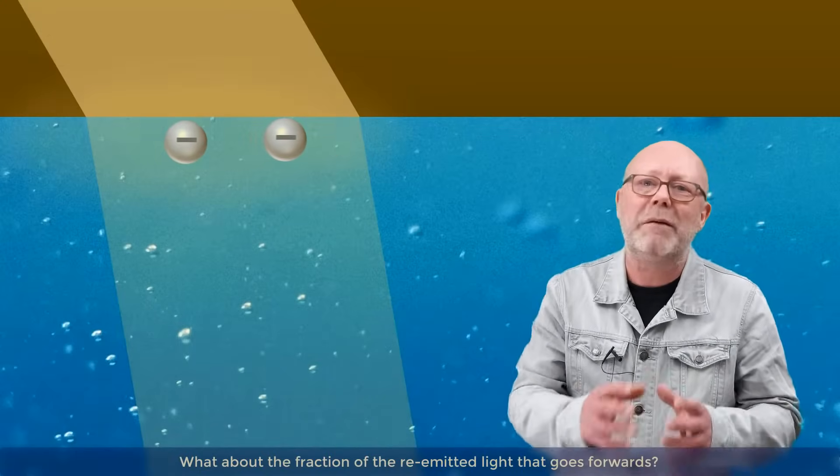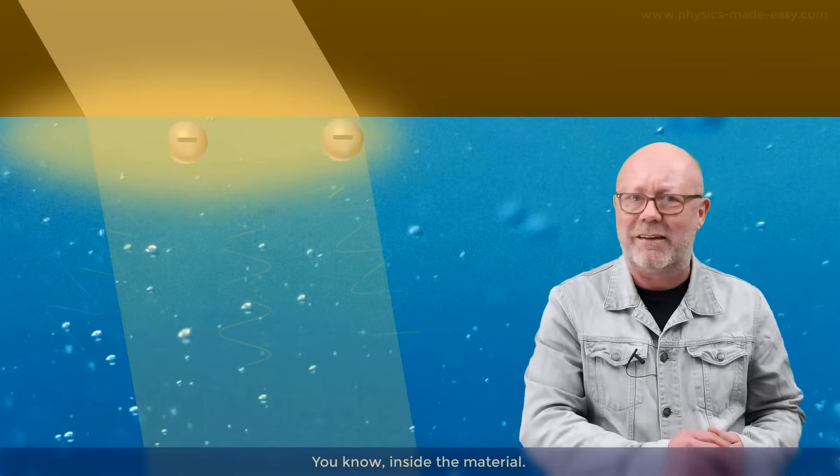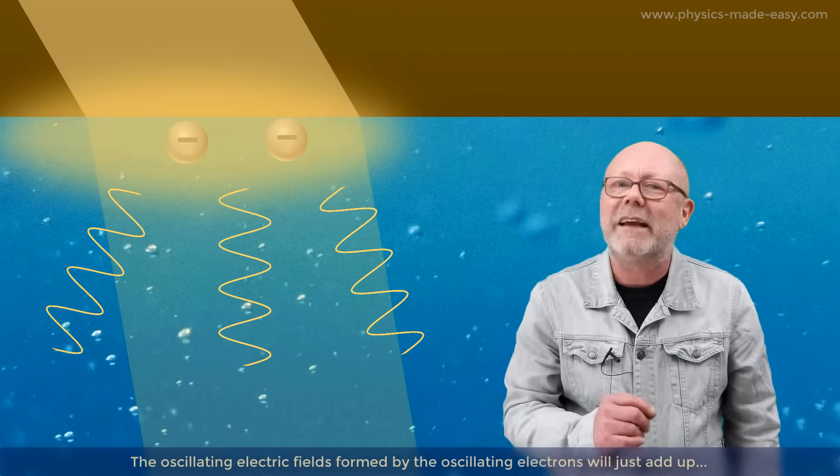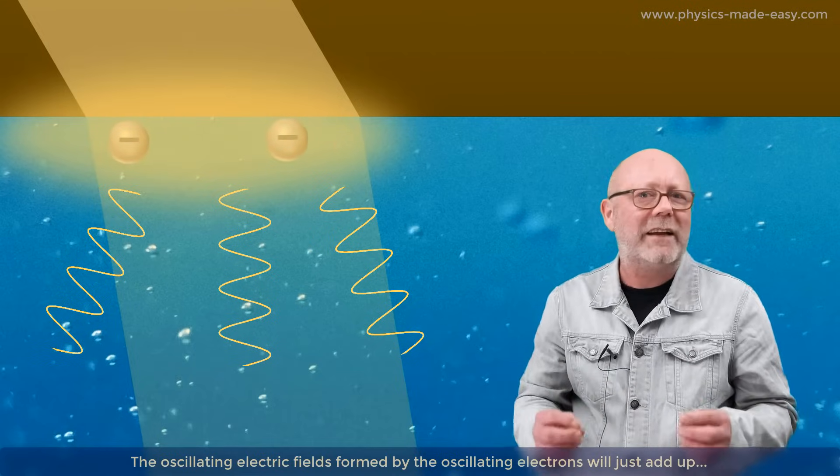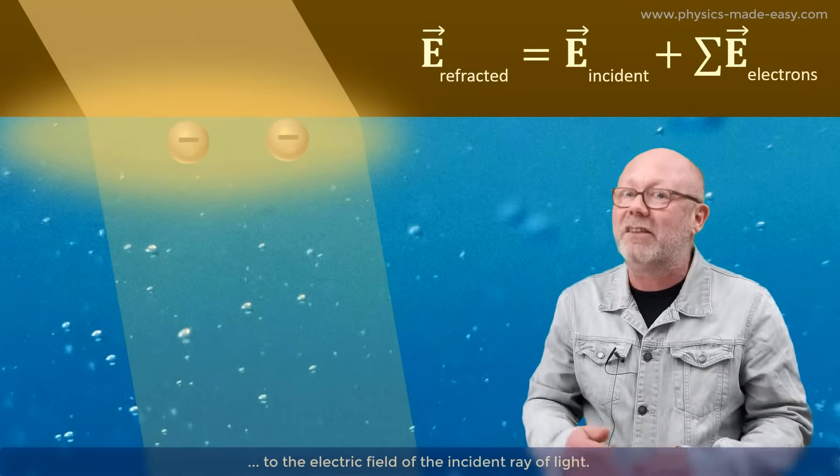What about the fraction of the emitted light that goes forwards? You know, inside a material. The oscillating electric fields formed by the oscillating electrons will just add up to the electric field of the incident ray of light.